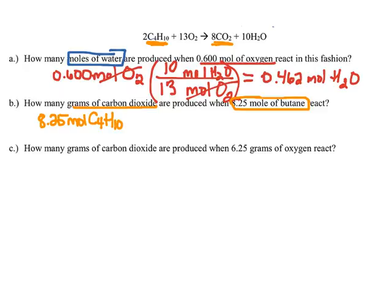Am I starting with moles? Yes, perfect — they give me 8.25 moles. So I can immediately put moles of C4H10 in the bottom so it cancels out, and moles of CO2 on top because that's my desired substance. I get the conversion factor from my coefficients: there's a 2 in front of butane, and an 8 in front of CO2. Moles of C4H10 cancel out. It's very important to be specific about your unit — don't just say moles, say moles of what. That's going to help guide your stoichiometry process. Now I have moles of CO2.